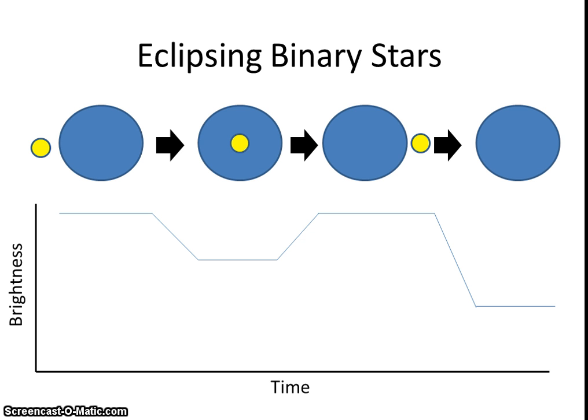Eclipsing binary stars are stars that we look at from Earth that pass in front of each other edgewise. The interesting thing about eclipsing binary stars is if we observe them, we'll see their brightness change over time.